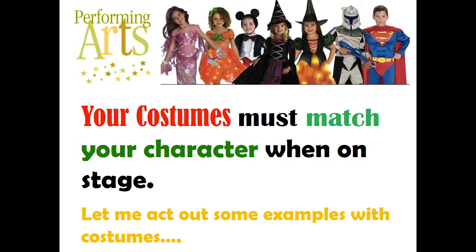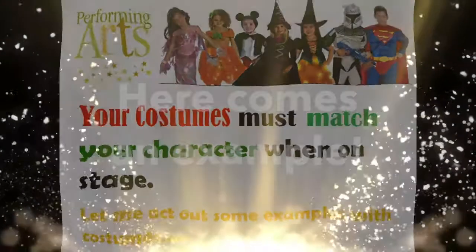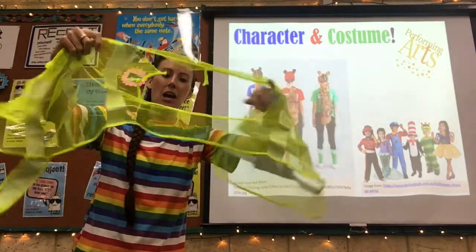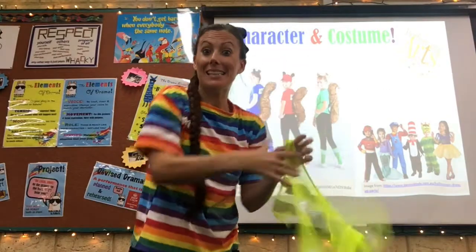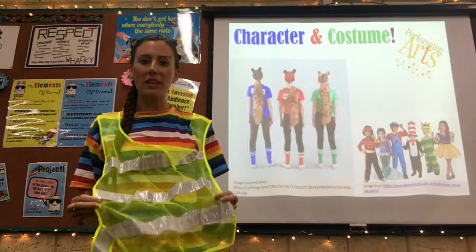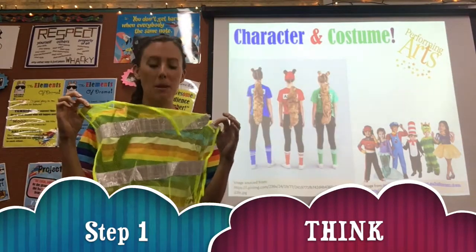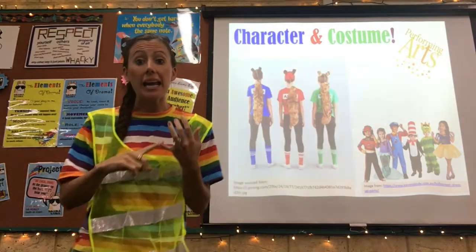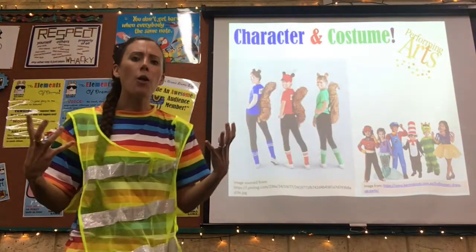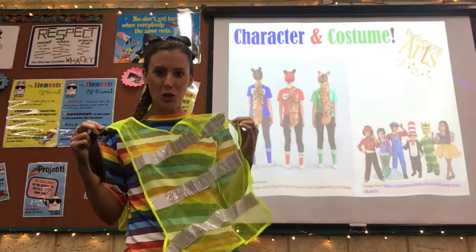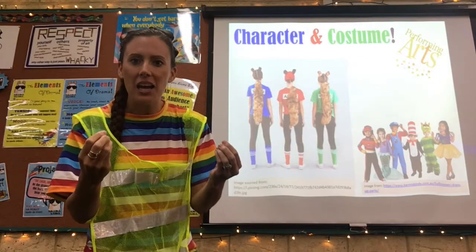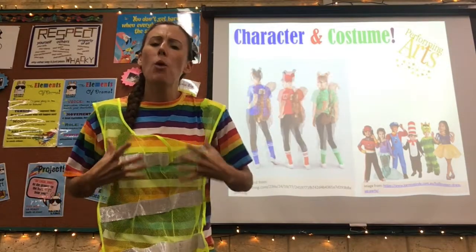I'm going to act out some examples with costumes now, and you'll see how the characters I've created are directly linked and matched to my costumes. A costume doesn't have to be anything fancy — it could just be something you have lying around the house. So I've got my costume on. The first thing I'm going to do is think: what sort of person could I imagine wearing something like this? I'll think about a name, how old my character is, what that character might do or say that matches this costume. Once I've decided who my character is, I have to think about how they will behave — what will my voice sound like? Am I a nice person? Am I a grumpy person? That will help me really flesh out my character.